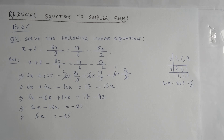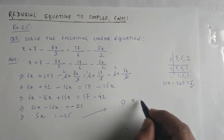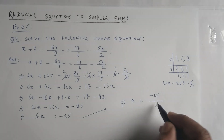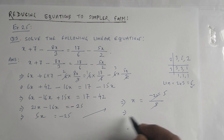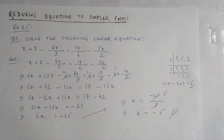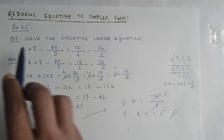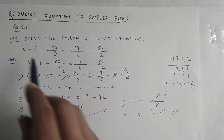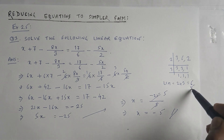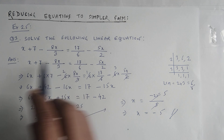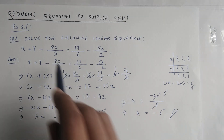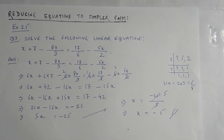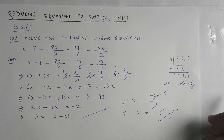5x equals minus 25, so x equals minus 25 divided by 5, which gives x equals minus 5. That is the required solution. To summarize the method: multiply each term in the given equation — whether on the left or right — by the LCM of the denominators. The LCM here was 6, derived from denominators 3, 6, and 2. This converts the equation to a simpler form and you can solve for x.